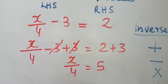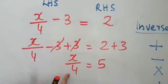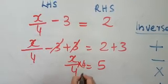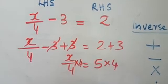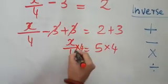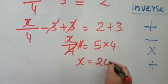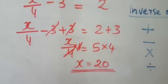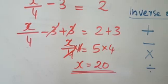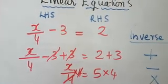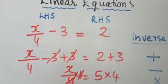Now this 4 is divided here, so we will multiply by 4. RHS also we will multiply by 4. So 4 and 4 will get cancelled. x = 5 × 4 = 20. That is the solution. Another method for solving equations is called the transposition method, which we will learn in the next class. Thank you.